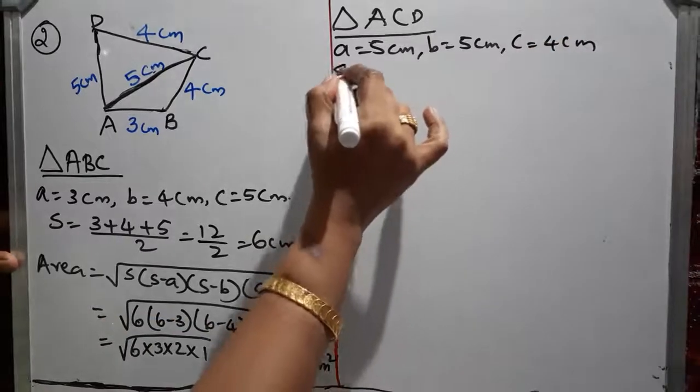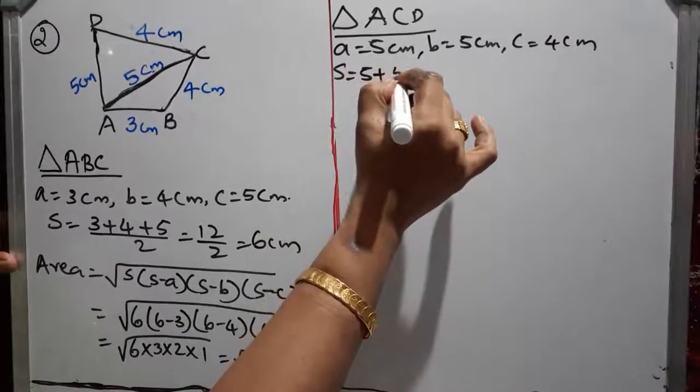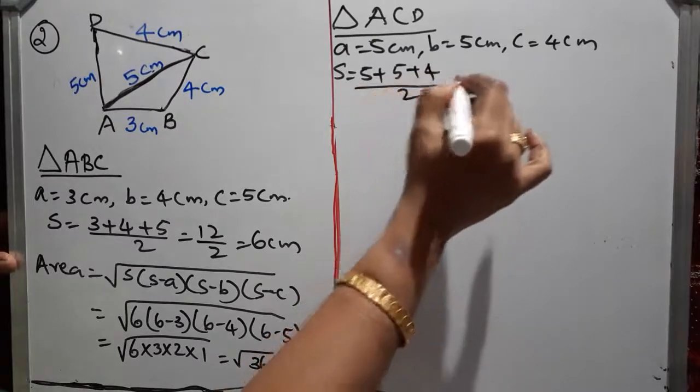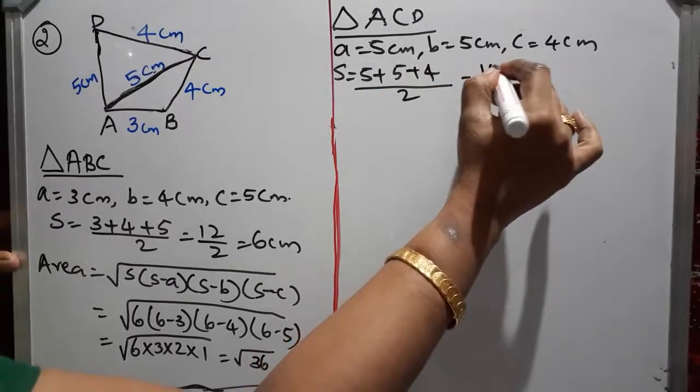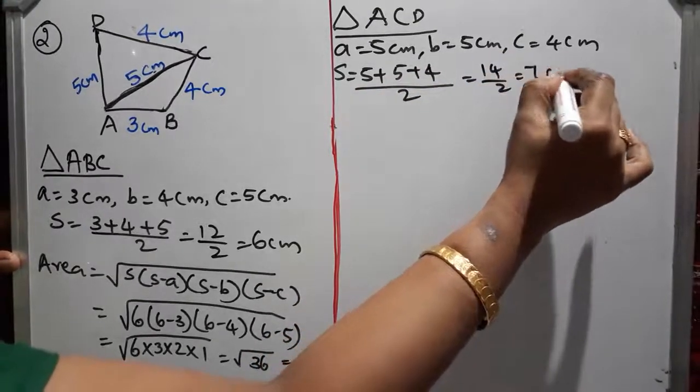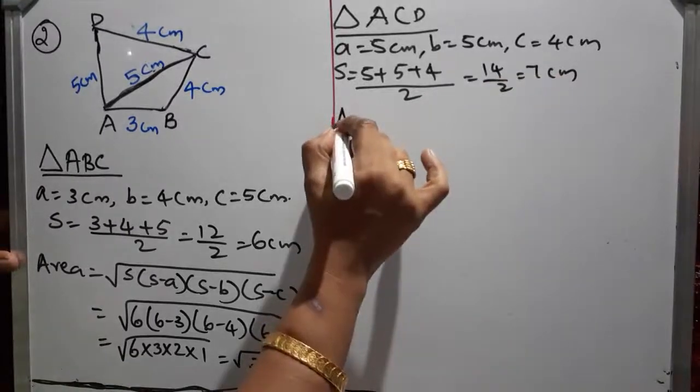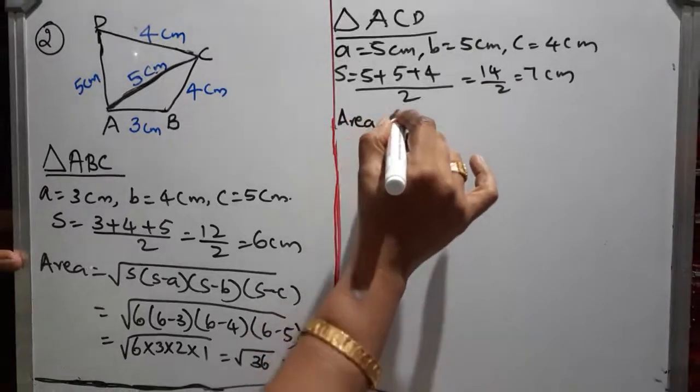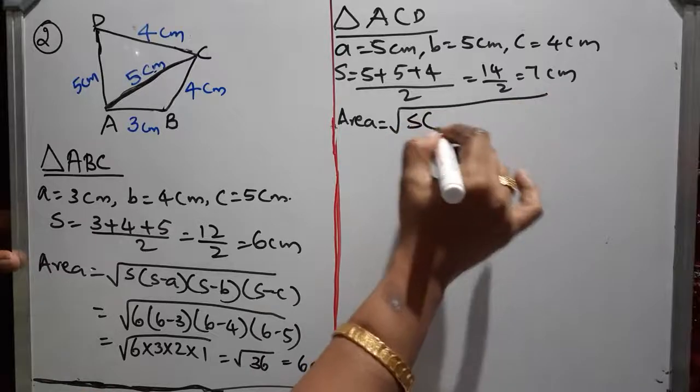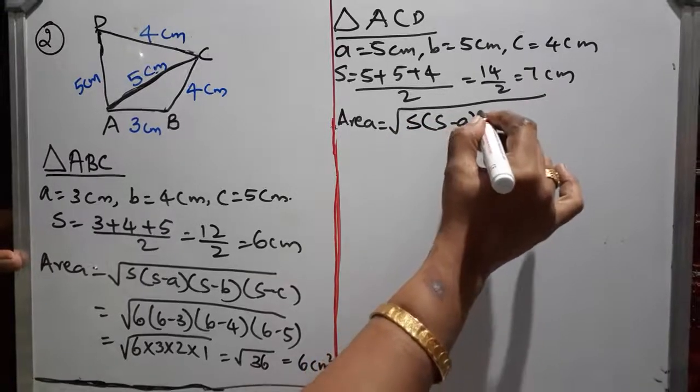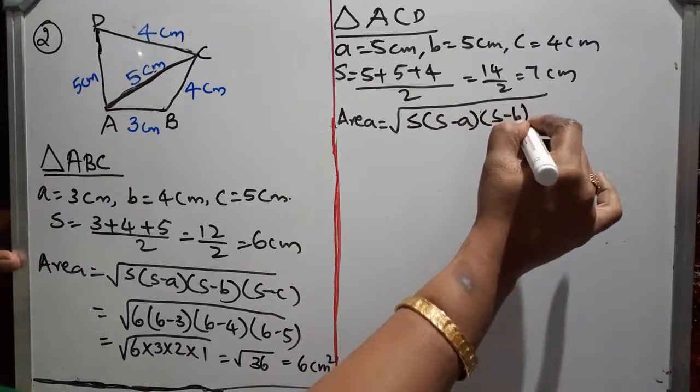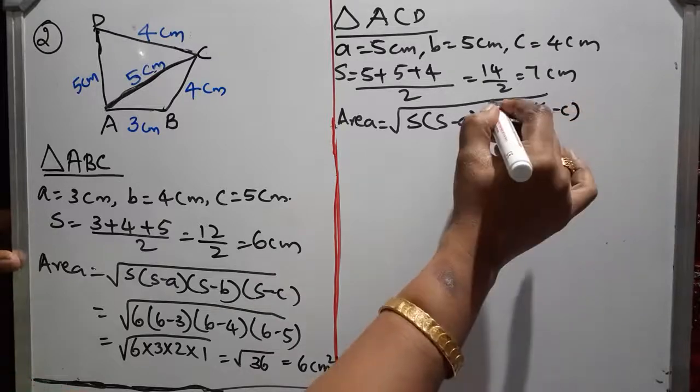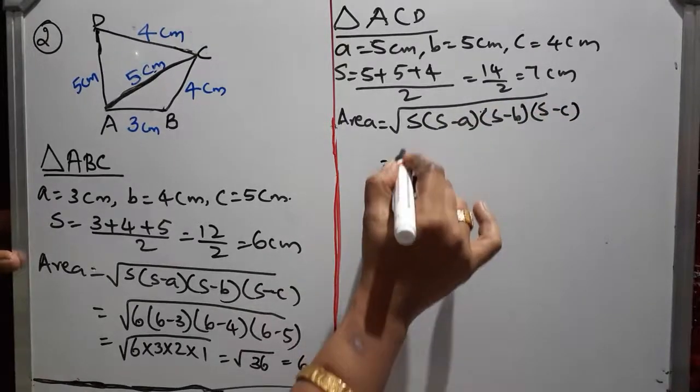Then S equal to 5 plus 5 plus 4 by 2 which is equal to 14 by 2, 7 cm. Area. Root of, first formula. S into S minus A into S minus B into S minus C.